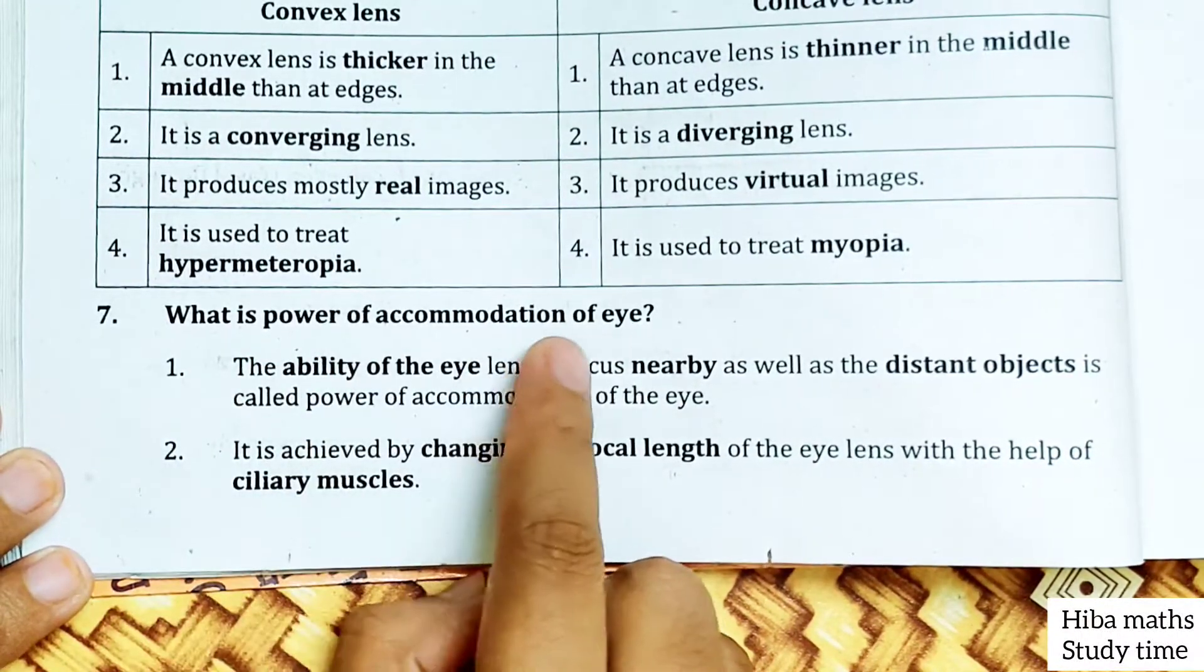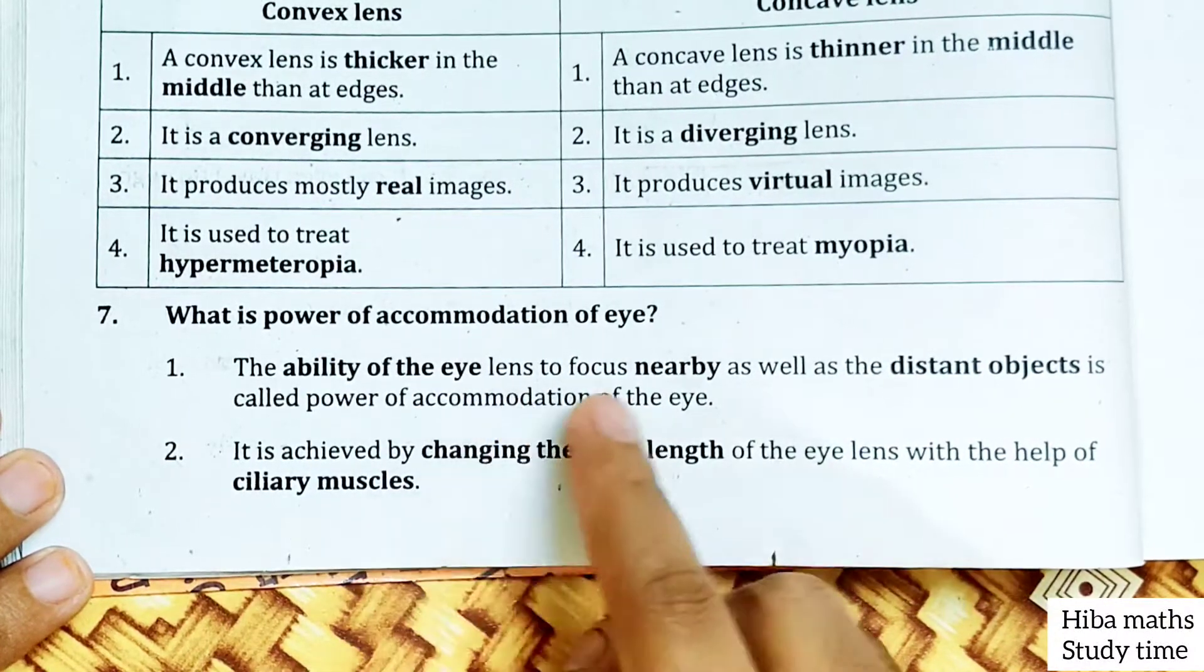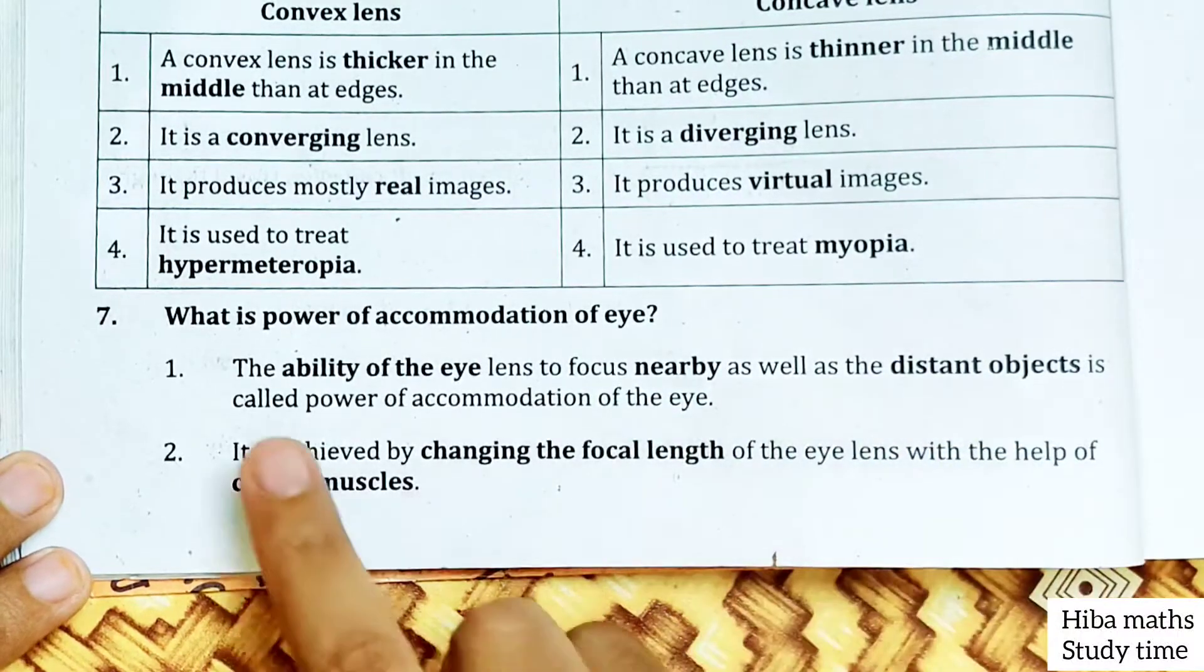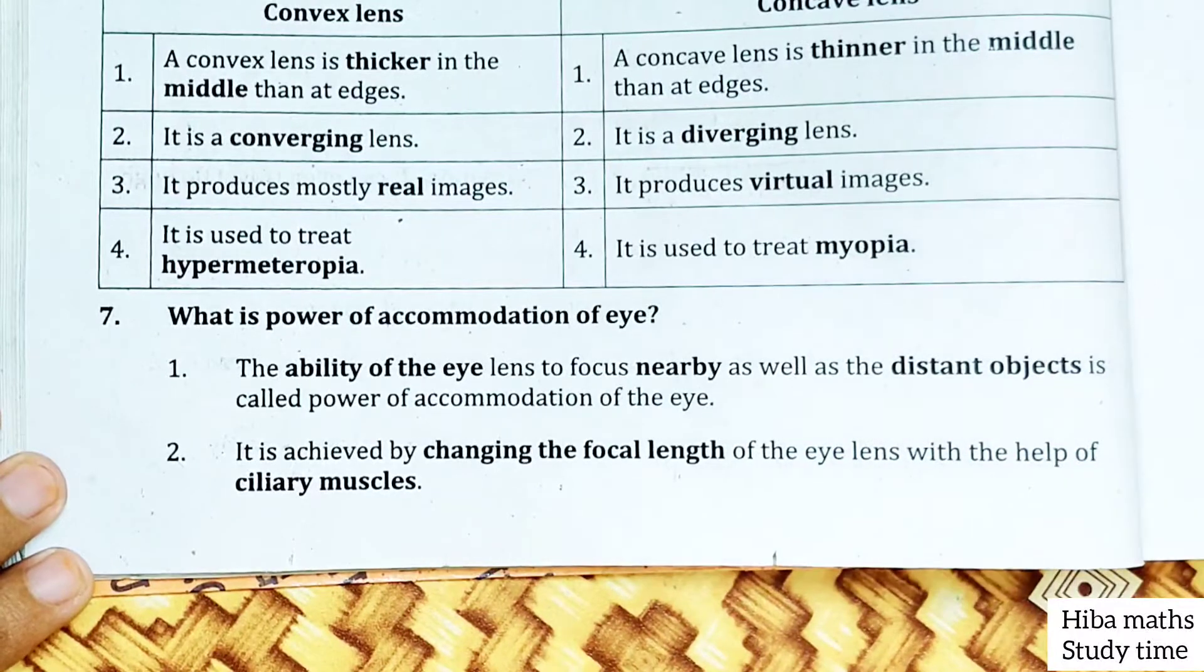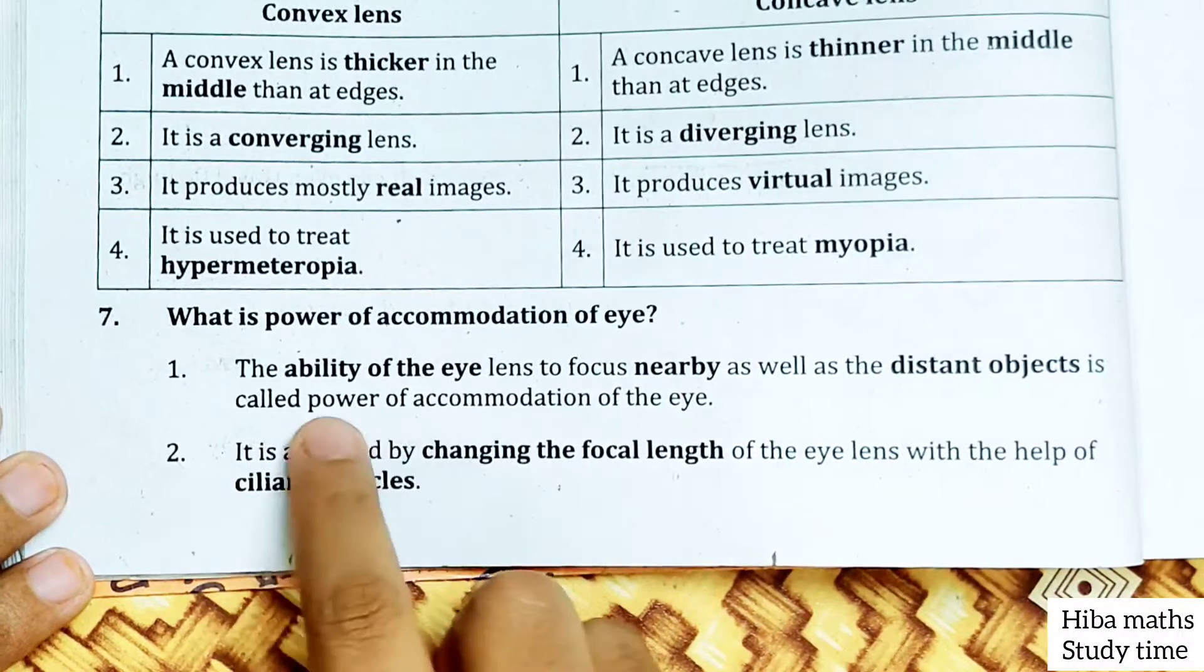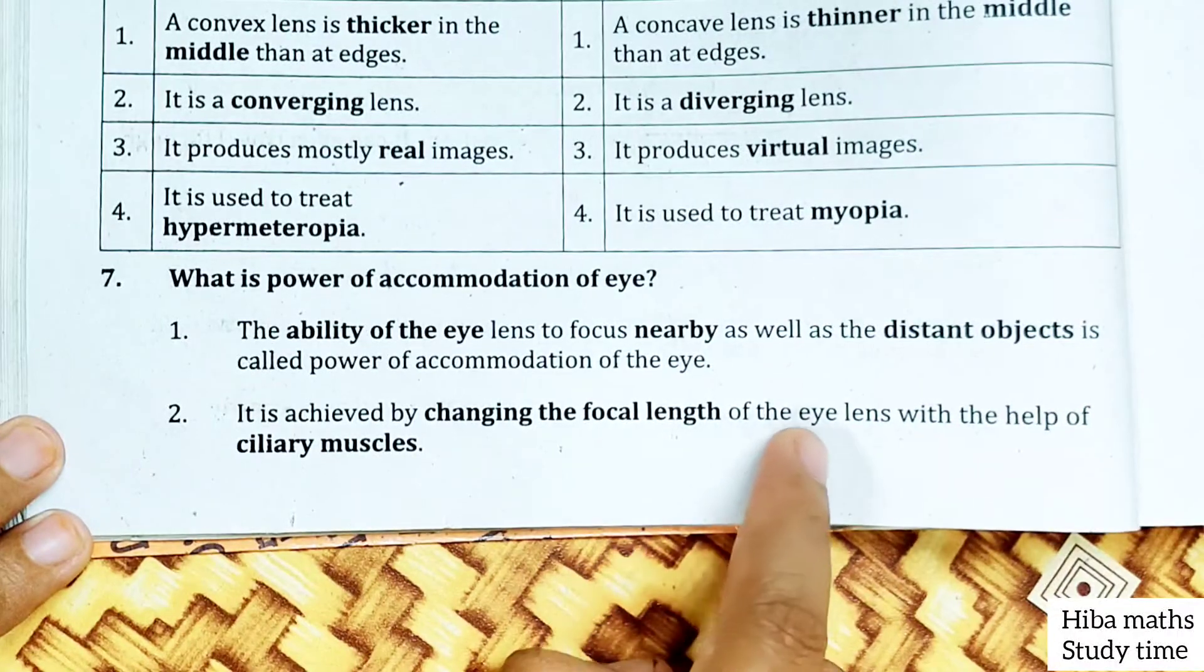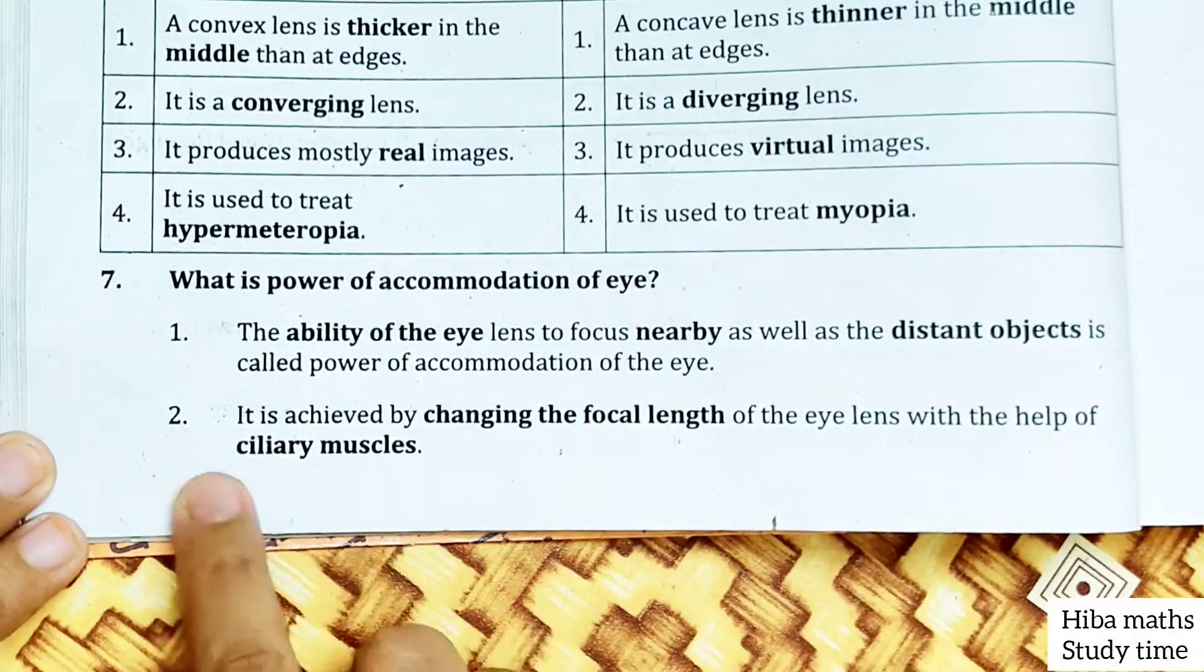What is the power of accommodation of eye? The ability of the eye lens to focus nearby as well as distant objects is called power of accommodation of eye.